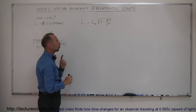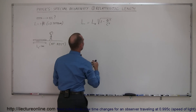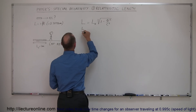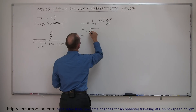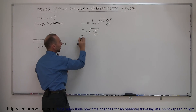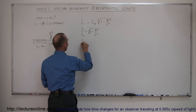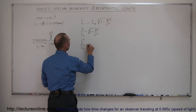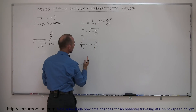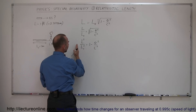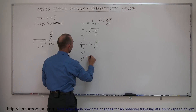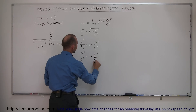Let's solve that equation for v squared. First, divide both sides by L₀, so L divided by L₀ equals the square root of 1 minus v squared over c squared. Now square both sides to get rid of the radical, giving L squared divided by L₀ squared equals 1 minus v squared over c squared. Rearranging, v squared over c squared equals 1 minus L squared over L₀ squared.